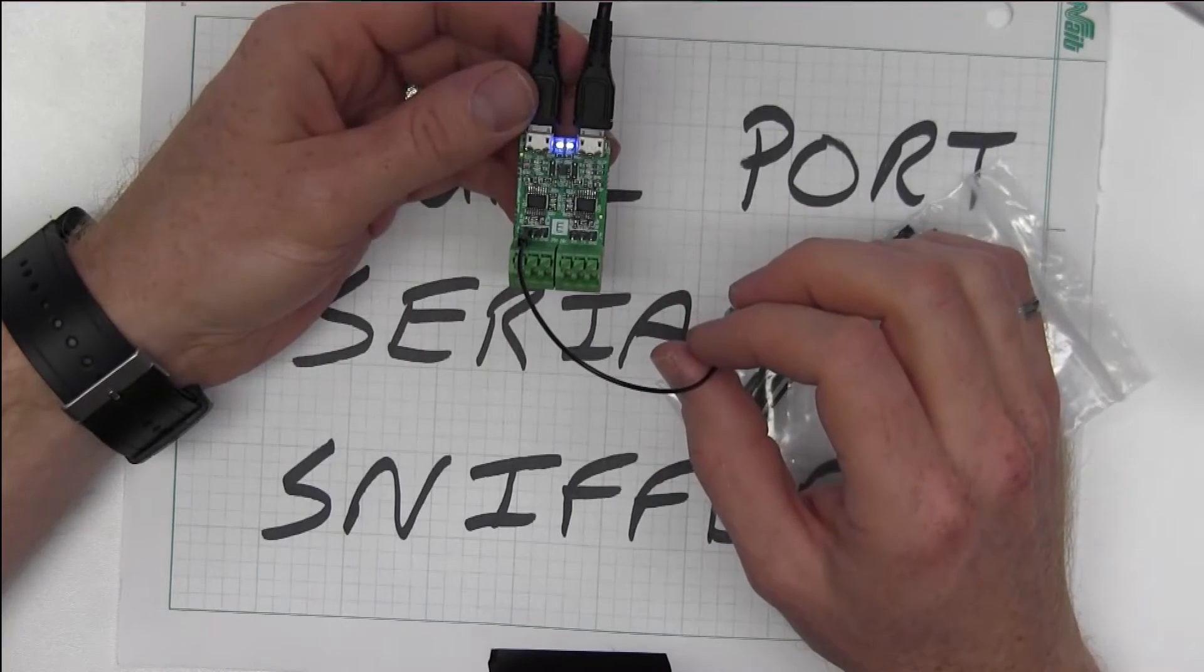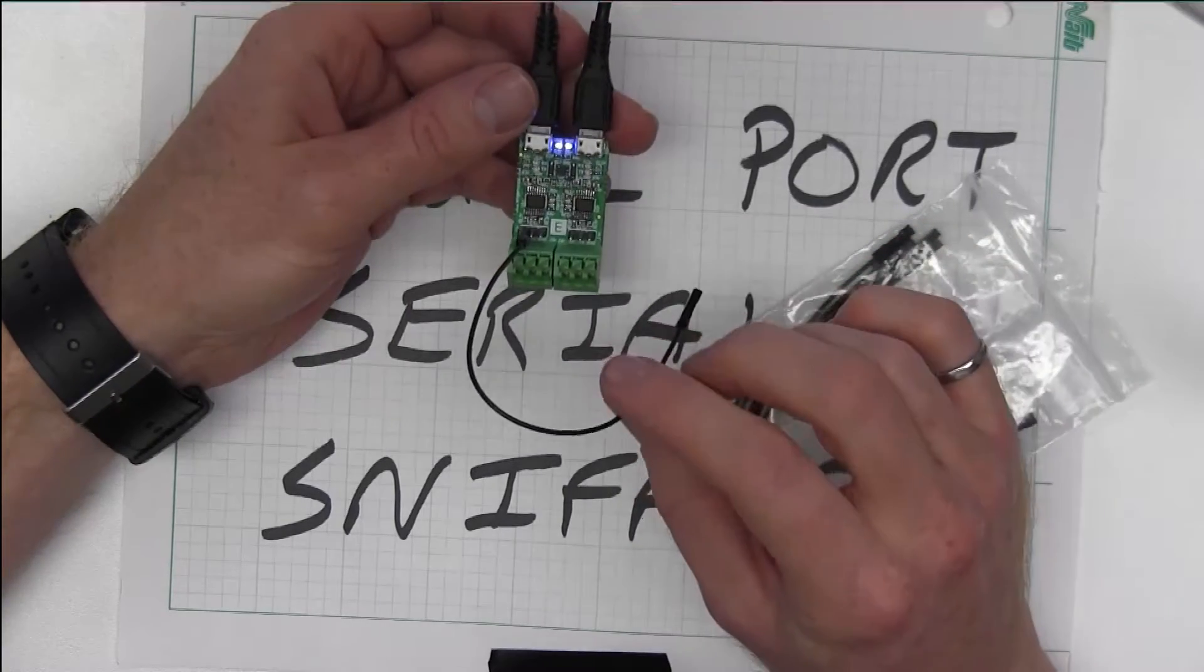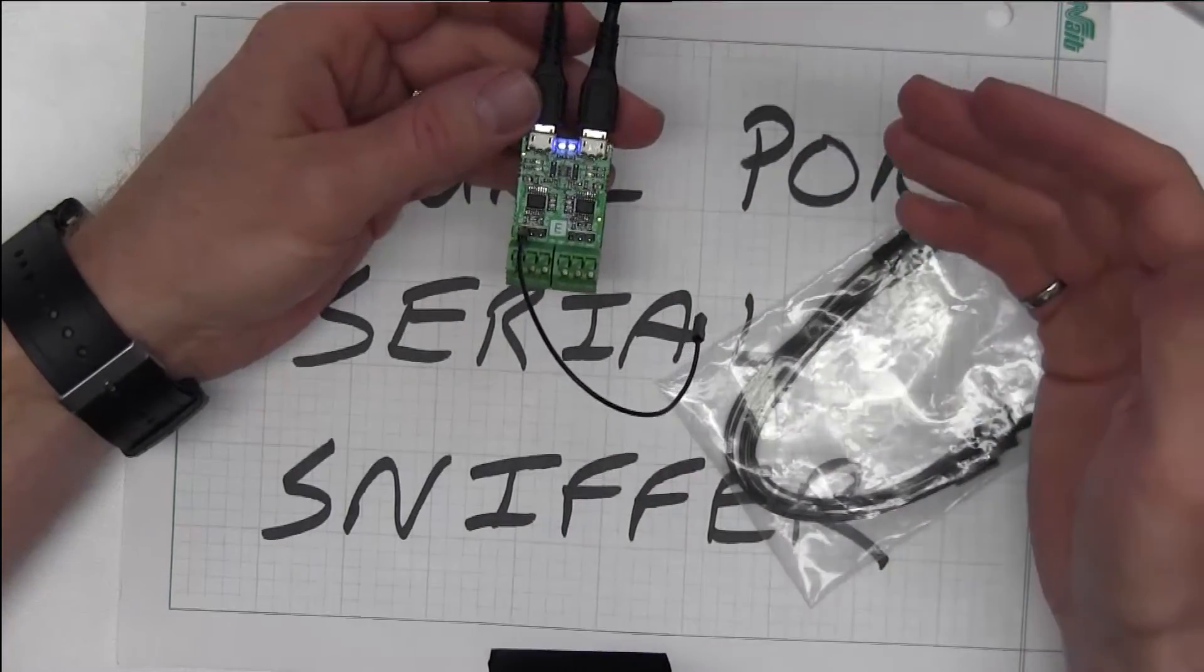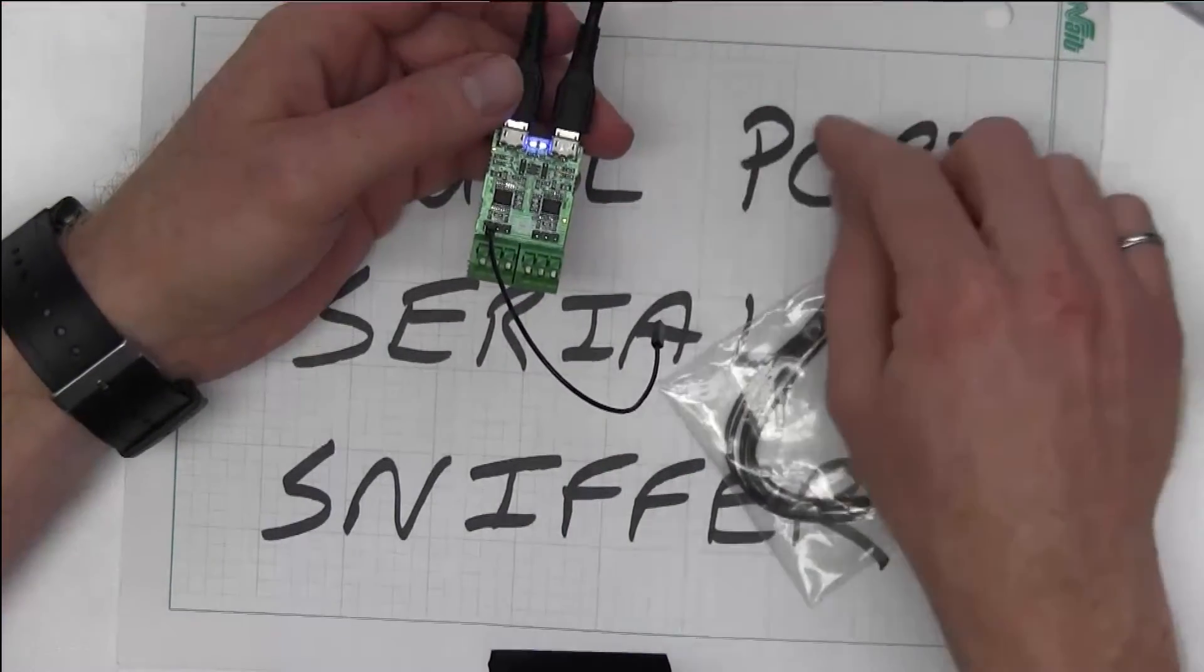Now, you might ask, well, why do you need these different configurations? And if you truly want to sniff a serial port in a non-intrusive way, you have transmit and receive lines.